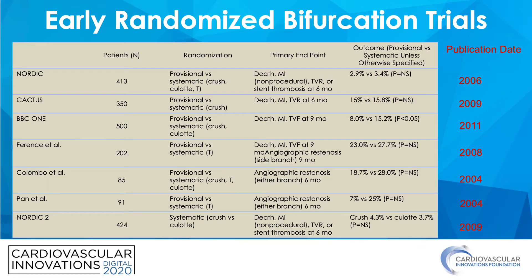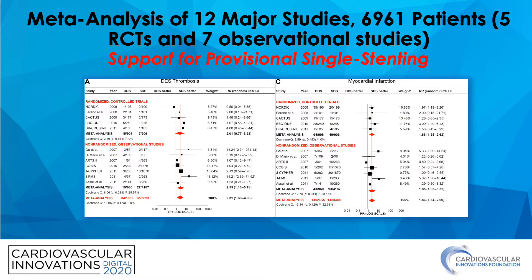The approach to addressing bifurcation disease has evolved over the years. The provisional approach has for a long time been deemed the most preferred approach to treating bifurcations. Early randomized bifurcation trials, many of which are shown in this table, seem to favor a provisional approach as opposed to a two-stent technique. However, if we look at the dates of these publications, these were done more than a decade ago without the advent of more contemporary stent technology or contemporary techniques. A meta-analysis from 12 major studies including almost 7,000 patients supported the use of a provisional single stent technique for bifurcation in decreasing DES thrombosis and myocardial infarction.